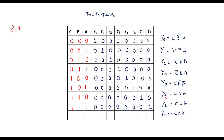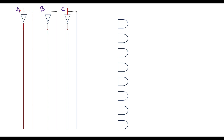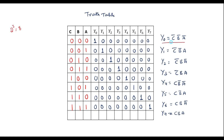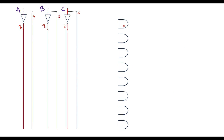With these boolean expressions, we can easily draw the logic diagram. We have 3 inputs: A, B, and C. Here I have taken inverters, so this line is A and the output is A̅. Similarly, this is B and the output is B̅. This is C and the output is C̅. We have 8 outputs, so I need to consider 8 AND gates. Y0 requires an AND gate for C̅·B̅·Ā.